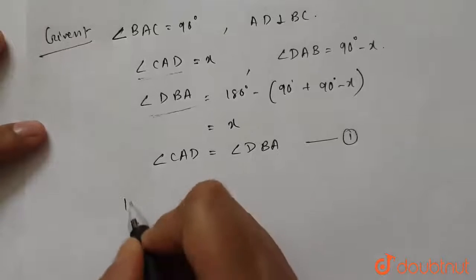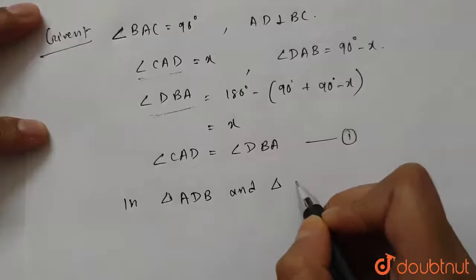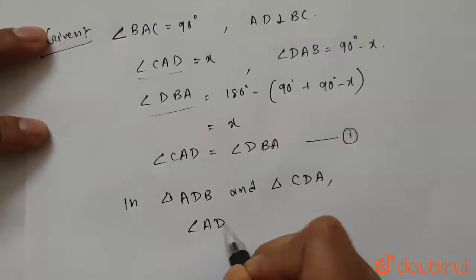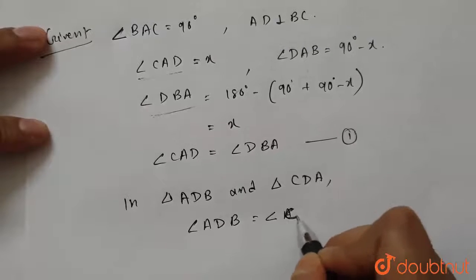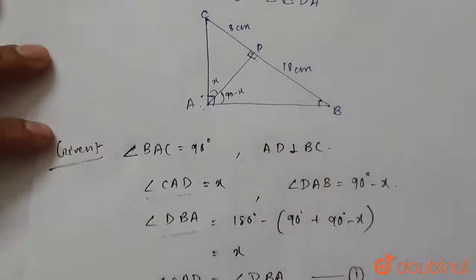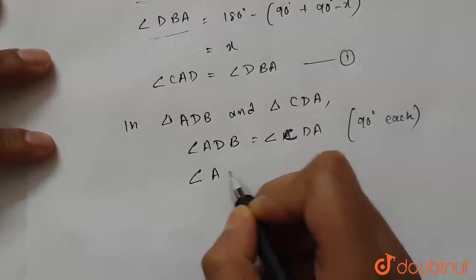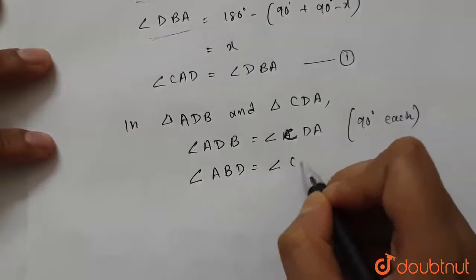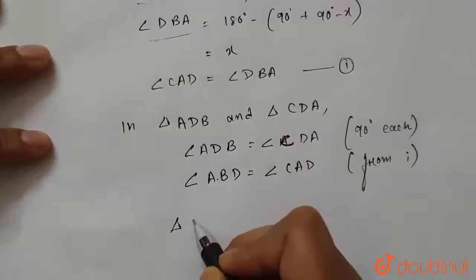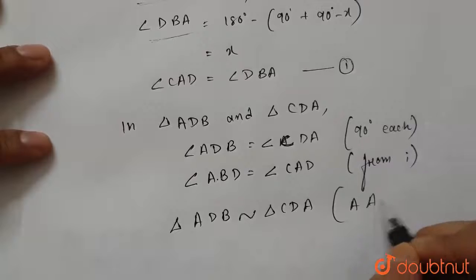In triangle ADB and triangle CDA, we can see that angle ADB equals angle CDA, 90 degrees each. This was given in the question. These two angles are 90 degrees. Now angle ABD equals angle CAD. This one is from equation number 1. So we have proved that triangle ADB is similar to triangle CDA using the AA similarity.